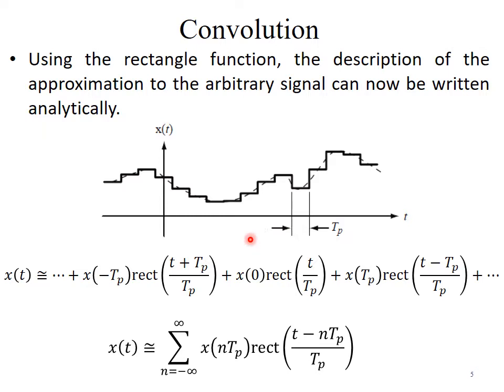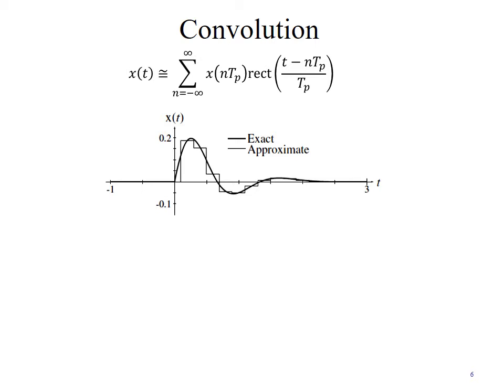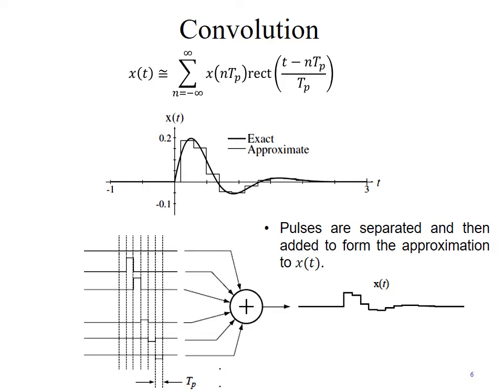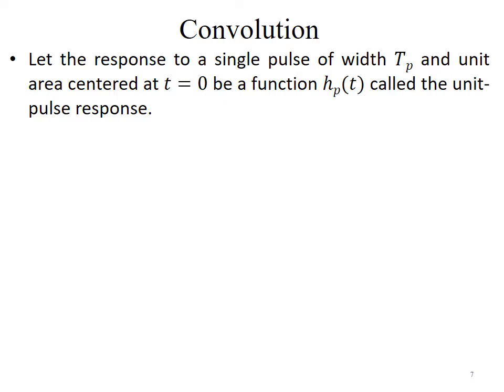The signal x(t) is broken into different pulses which are added together to form x(t). Pictorially, the signal is decomposed into pulses, each pulse is applied separately to the system, the output of each pulse is recorded, and all outputs are added together to find the combined response. This is what happens in the convolution method.